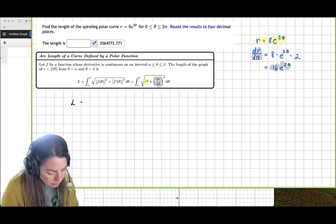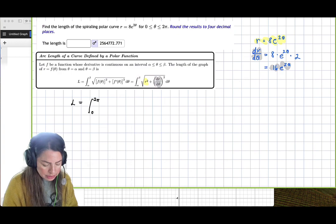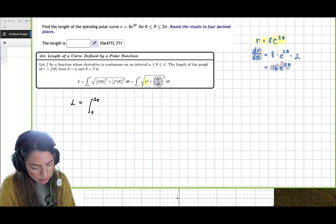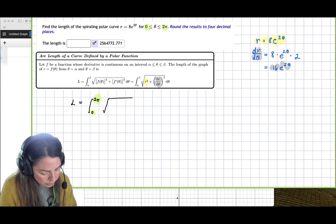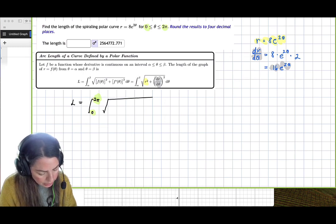So the length here is going to be equal to the definite integral from 0 to 2 pi because it was given right up here. Alright, square root of, I'm just going to draw a line here.